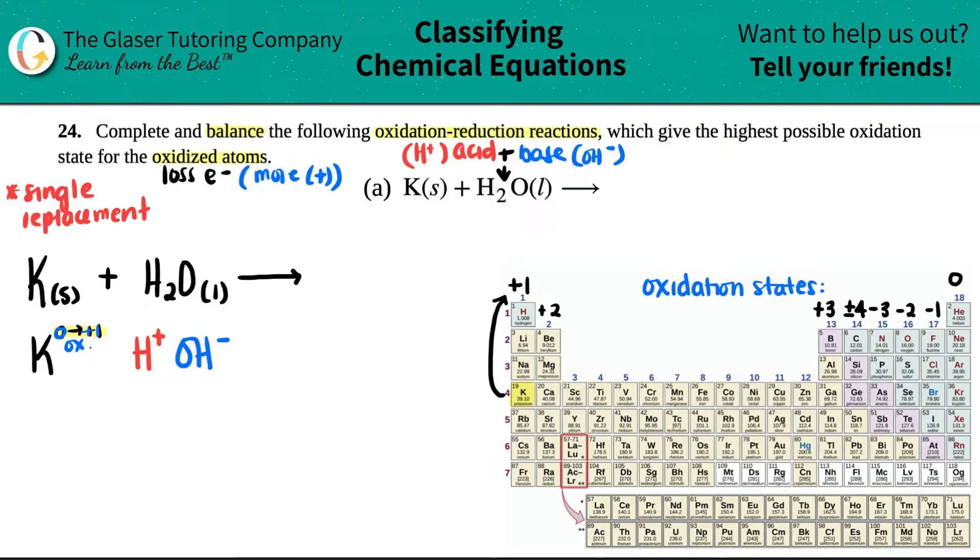Now, is it the highest possible oxidation state? Yes. Potassium only wants to be a plus one, right? It wants to be a noble gas when it forms a compound. And if it loses one electron, it goes from 19 to 18, argon.